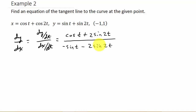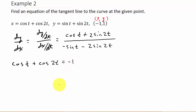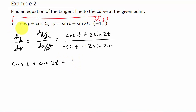Now I need to plug in the value of t to find the slope of the tangent line. But they don't give me t — they give me an x, y coordinate. So this tells me that cosine t plus cosine 2t equals negative 1, because x equals cosine t plus cosine 2t and x is negative 1. So I set this equal to negative 1 and solve for t.